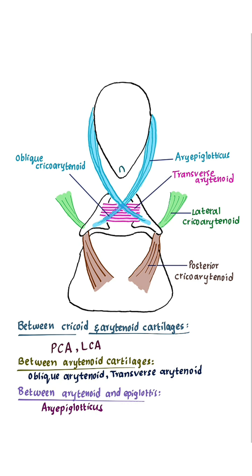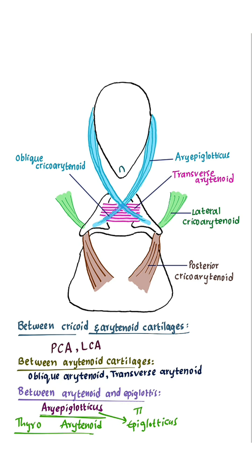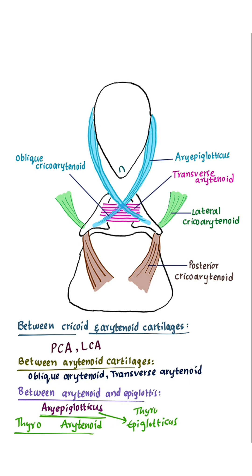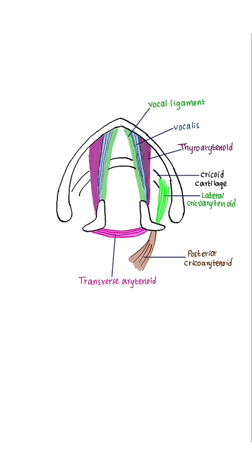So we got five muscles here. Remember the word 'aryepiglotticus' — split this word into arytenoid and epiglotticus, then add 'thyro' to both. You will get thyroarytenoid and thyroepiglotticus. The other muscle is vocalis.